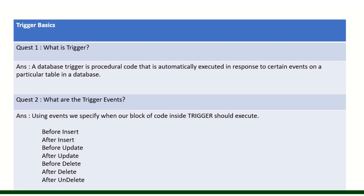Now, what are the trigger events? There are seven types of events: before insert, after insert, before update, after update, before delete, after delete, and one more — after undelete. After undelete means you have deleted a record, gone to the recycle bin, and restored it — at that moment it will occur.